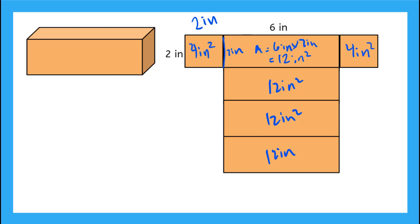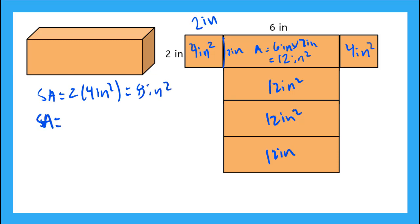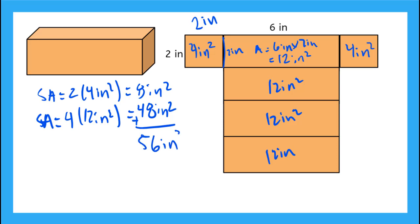I add up all of these areas together. The surface area of my bases is 2 times 4 inches squared, which is 8 inches squared. The surface area of my sides is 4 times 12 inches squared, which gives me 48 inches squared. Finding the sum: 48 plus 8 gives me 56 inches squared. That would be the total surface area of my square prism.